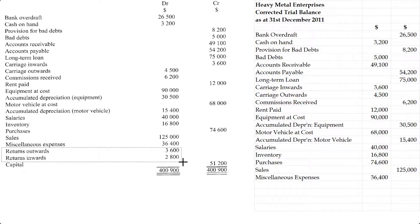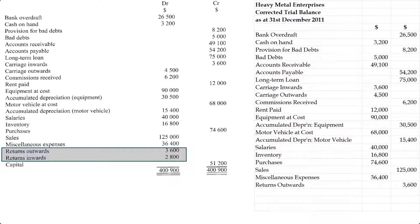Then we have returns outwards and returns inwards. Returns outwards is subtracted from purchases — it's like an anti-expense, so it will be shown as a credit balance. Returns inwards is subtracted from sales — it's like an anti-revenue. Since revenues have credit balances, returns inwards will have a debit balance.